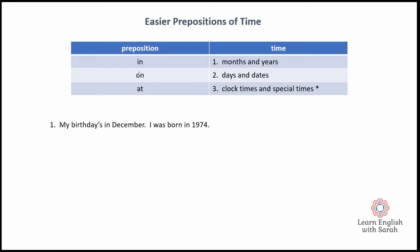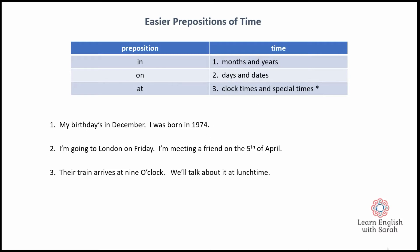Here's an example for 'in': my birthday's in December, I was born in 1974 — so 'in' for a month and 'in' for a year. Here are some examples with 'on': I'm going to London on Friday, and I'm meeting a friend on the 5th of April — so 'on' for a day and 'on' for dates. We also use 'on' for special days like Christmas Day or New Year's Day. And 'at' with a clock time: the train arrives at nine o'clock, and 'at' for a special time like lunchtime.